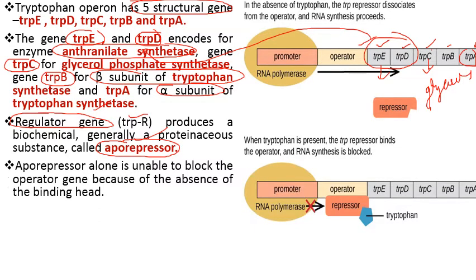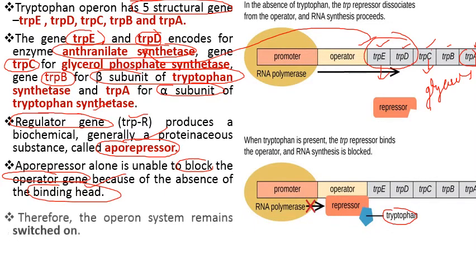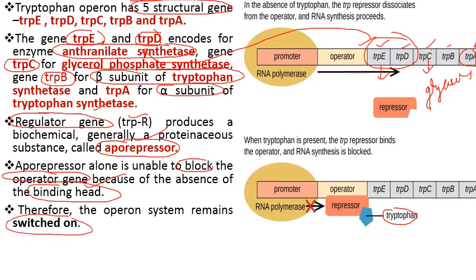The apo-repressor alone is unable to block the operator gene. It requires a substrate — tryptophan — to be present; only then does it become activated. Otherwise, in the absence of tryptophan, it cannot bind to the operator gene. Therefore the operon system remains switched on. In the absence of tryptophan, the operon system remains switched on, meaning the genes that code for enzymes involved in tryptophan synthesis remain activated, undergo transcription, and synthesize the different enzymes and proteins.